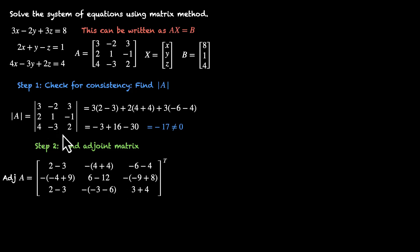Now let's find minors. For the top left, we have 2 - 3. This one is 4 + 4. The cofactor is -(4 + 4). This one is -6 - 4. This one is -4 + 9 with negative sign. For this one, we have 6 - 12. This one is -9 + 8, again with the negative sign. This one is 2 - 3. This one is -3 - 6, again with a negative sign. And finally, bottom right, we have 3 + 4. So this is the matrix of all the cofactors.